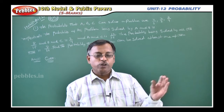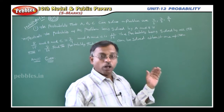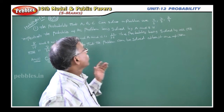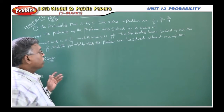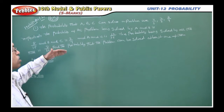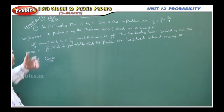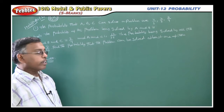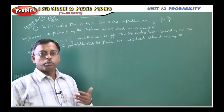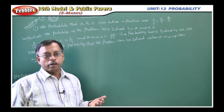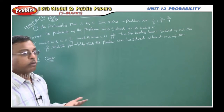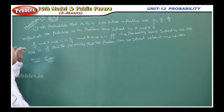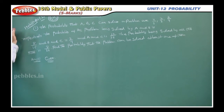Now we will see the new unit, that is probability. We will cover 5 more questions in this probability unit, beginning from model paper 1. We will cover some of the public papers also, all the public papers also. Listen carefully.